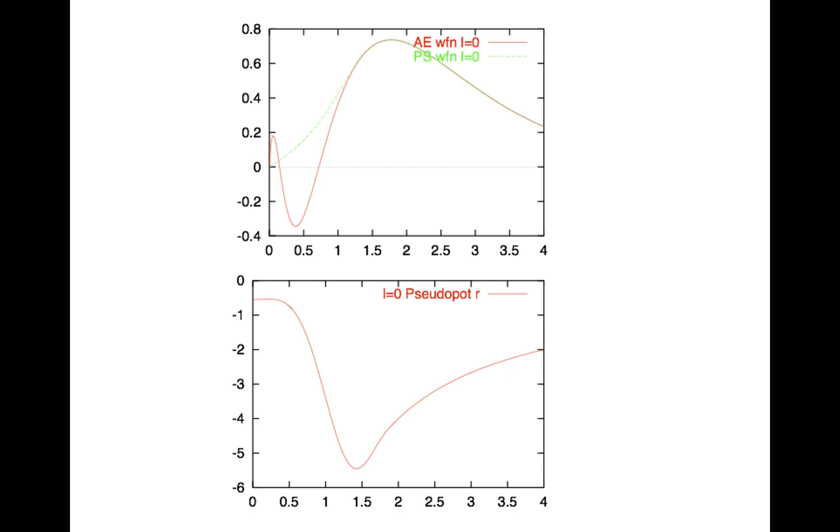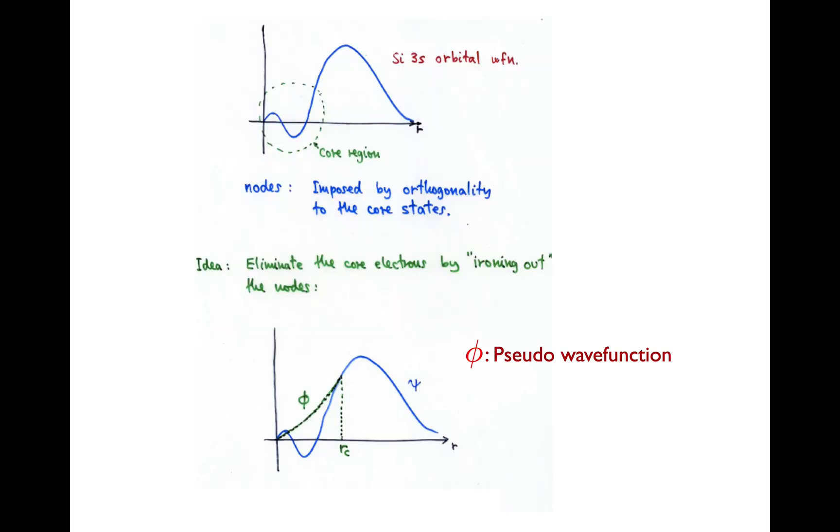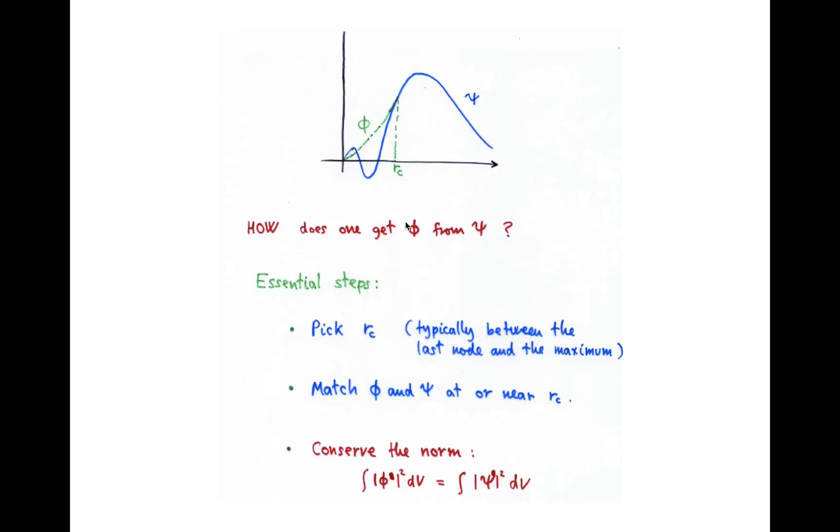Now the reasoning goes like this. If core electrons are inert, and we want to get rid of them, and if the nodes are a signature of the core electrons, why don't we get rid of the nodes? Why don't we iron out the wave function and get rid of the nodes, such as here? The idea is to get this pseudo wave function by picking some point at which you want to match it to the real wave function. The matching procedure here involves continuity of obviously the value and a few derivatives, depending on the method.